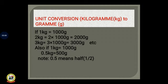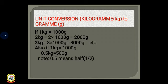Note that 0.5 kilogram is equivalent to 500 grams. What is 0.5? It simply means half — one over two. Half of 1000 is 500. So 0.5 kilogram means half kilogram, and half kilogram is equivalent to 500 grams. Take note: 0.5 kilogram is equal to 500 grams.